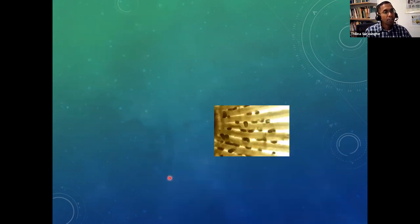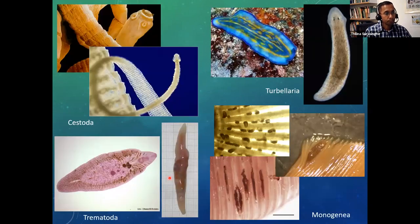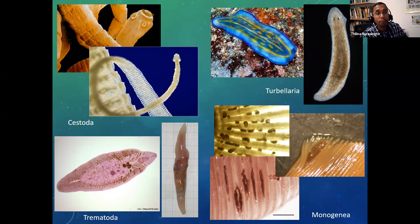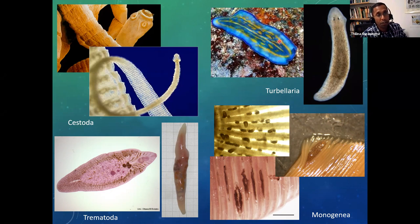Within Platyhelminthes, I want you to know four groups. The first is Cestoda — the tapeworms — which are fully parasitic gut parasites. Then we have Turbellaria, the only free-living form of Platyhelminthes; Planaria or Dugesia is one of the most common forms, and some really cool colorful aquatic forms are also known.